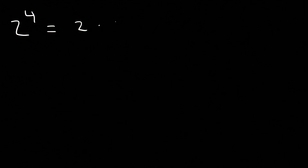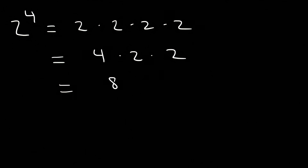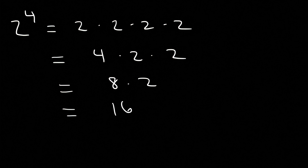Sometimes in a typical homework assignment you might be asked to evaluate certain expressions. Go ahead and evaluate 2 to the 4th power. The first thing to do is expand it: this is 2 times 2 times 2 times 2, four times. 2 times 2 is 4; 4 times 2 is 8; 8 times 2 is 16. So 2 to the 4th is equal to 16.